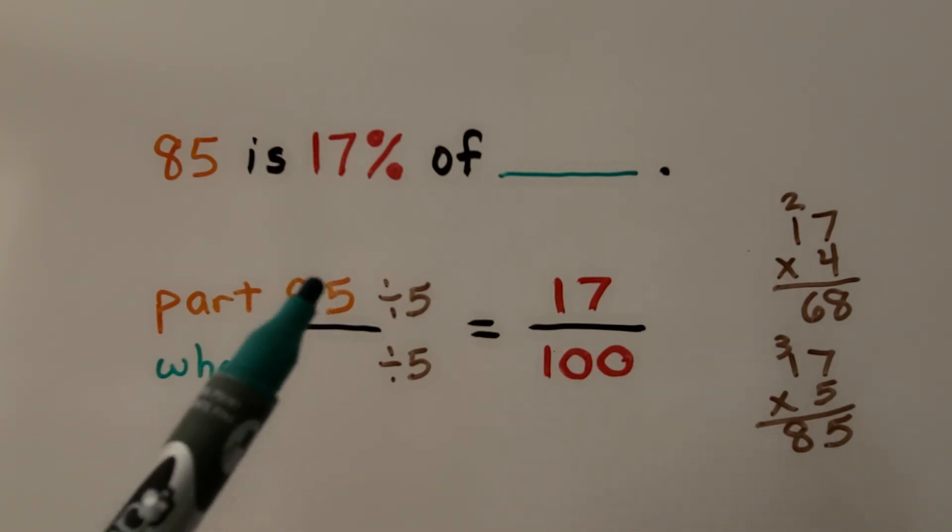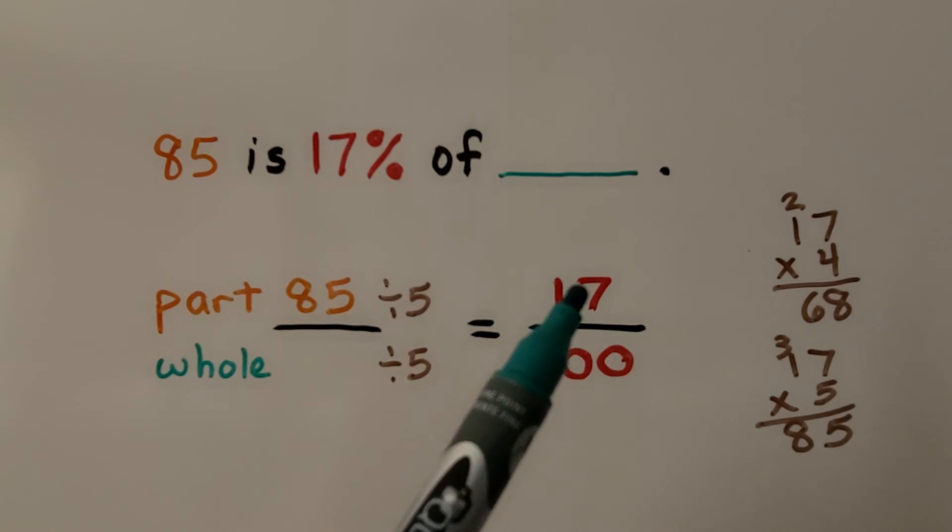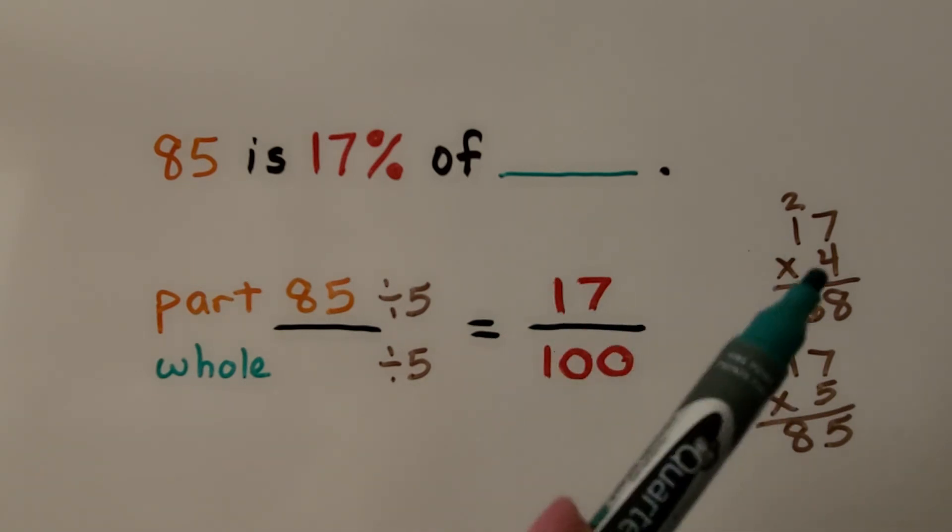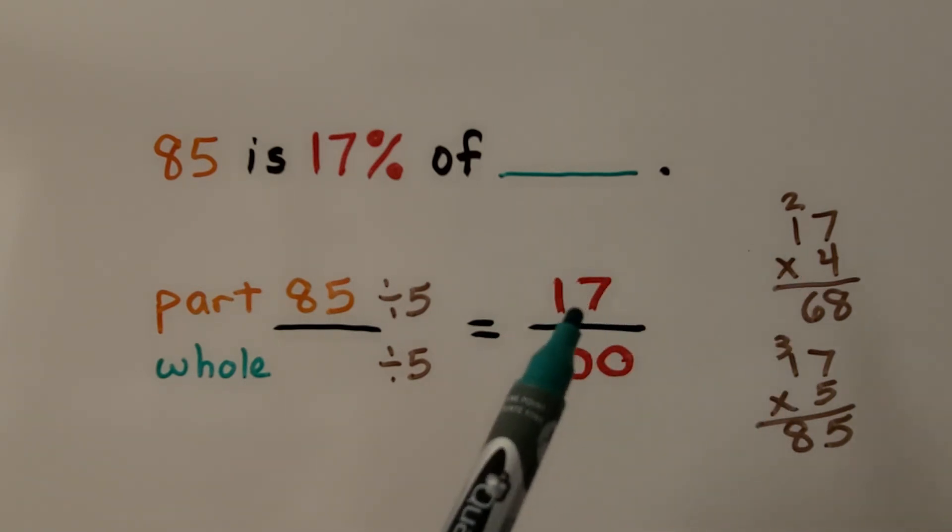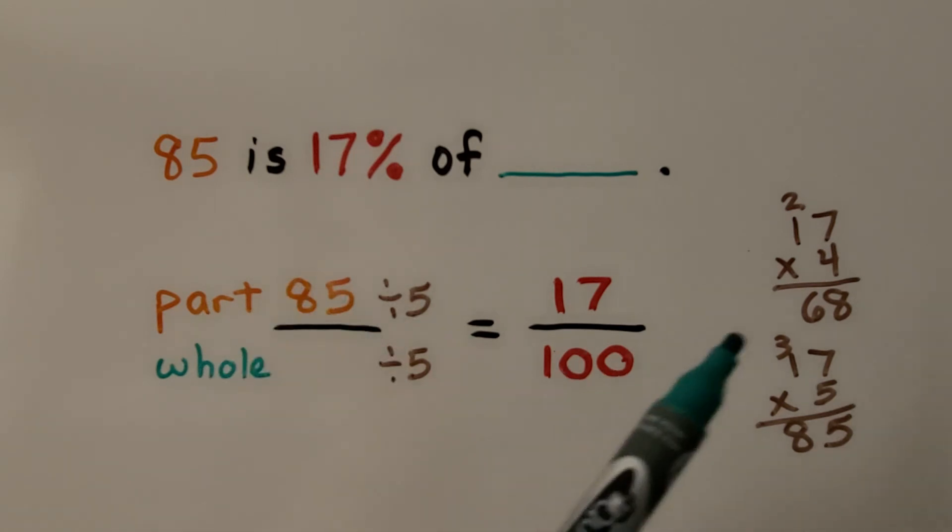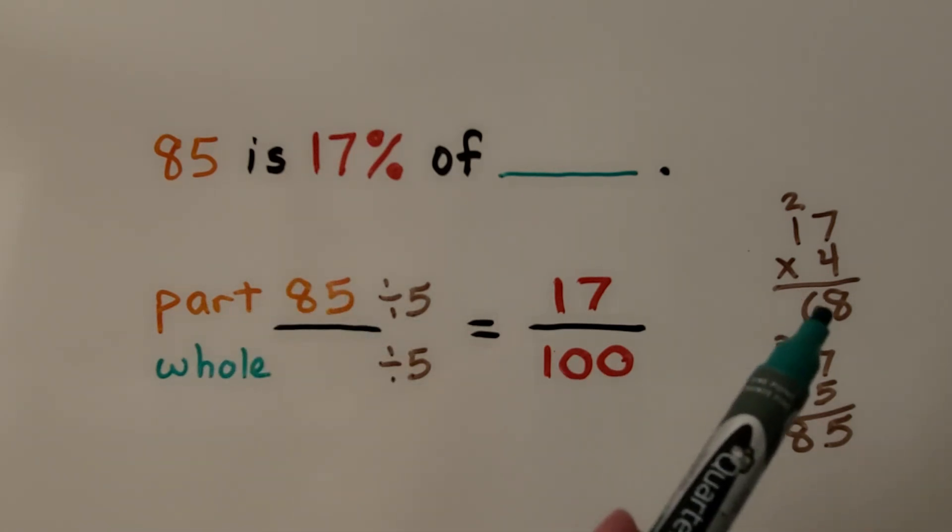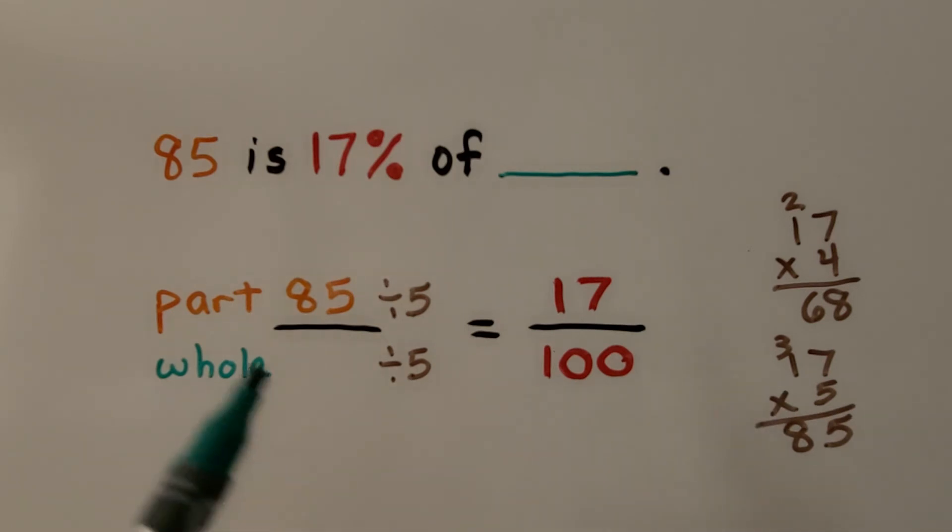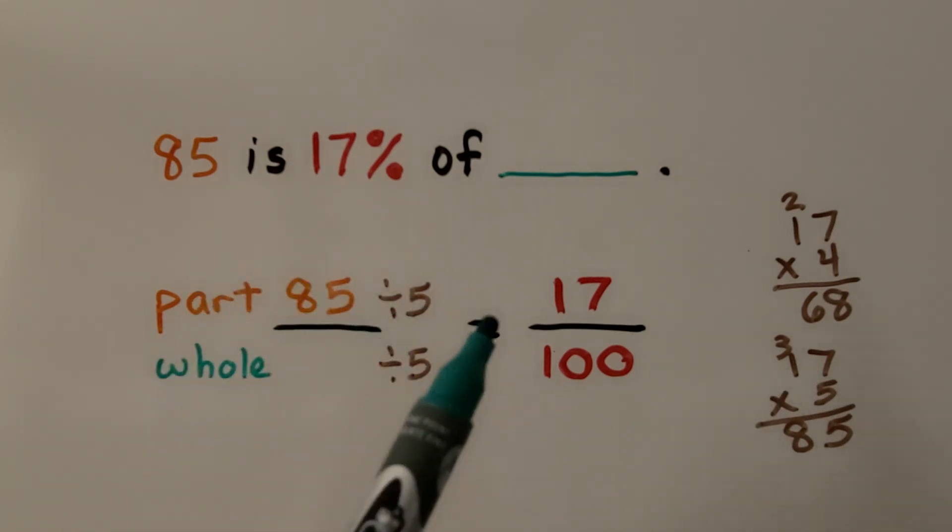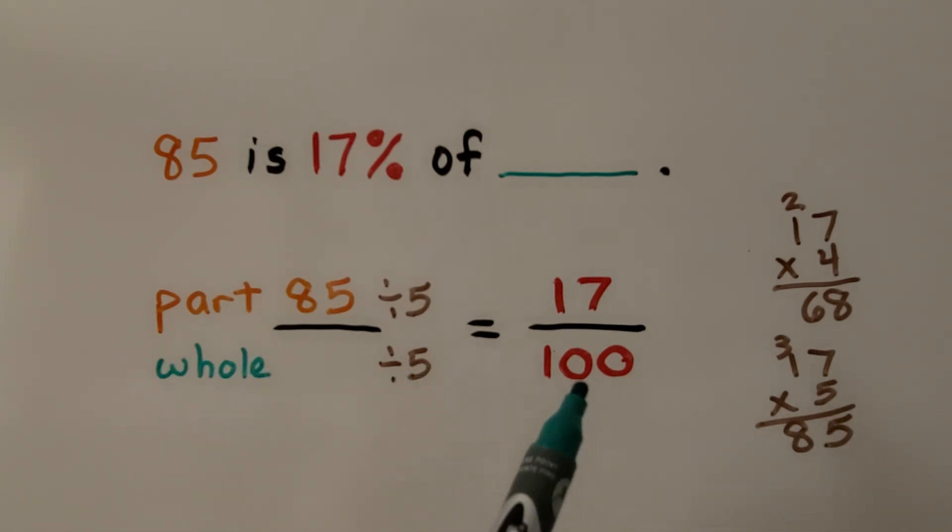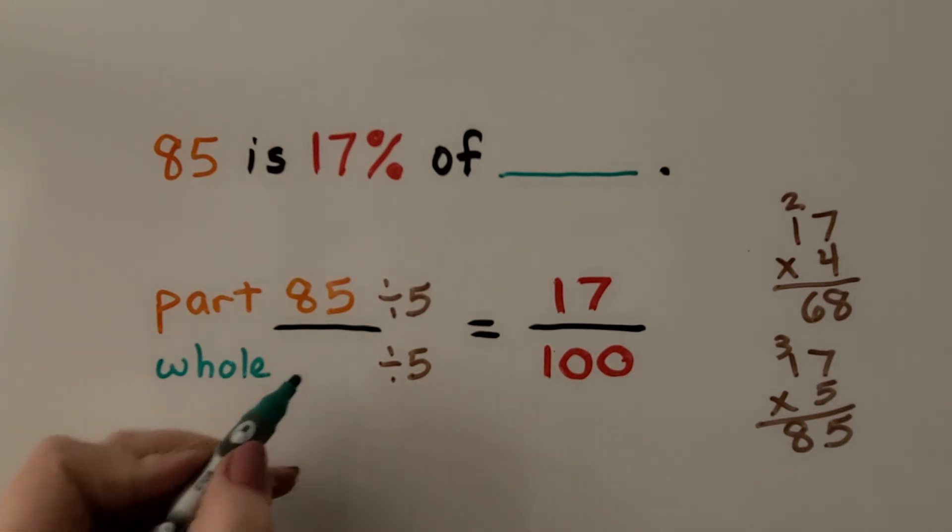We think: well, 85 divided by 5 is equal to 17. Because we can try doing multiplication on the side. 17 times some number is 85. And when I tried 4, that wasn't enough. That was only 68. But when I did 17 times 5, I got 85. That means 85 divided by 5 is equal to 17. That means whatever this is divided by 5 is equal to 100.